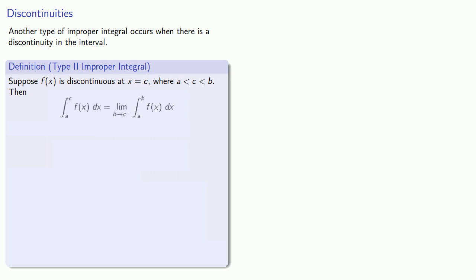First, we'll define the integral from a to c as the limit of the integral as our upper bound approaches c from below.